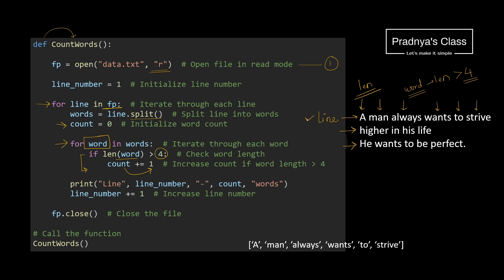If the length of the word is greater than 4, we have to count it — the variable 'count' gets incremented by 1 and is initialized to 0 inside the outer loop. According to the output we have to keep track of line number, so we use a variable 'line_number' initialized to 1. After printing the line number and count of such words, we increment the line number. Look at the print statement — we are printing line number and the count of the words. After processing the file, don't forget to close it. This is a user-defined function, so we must call it.